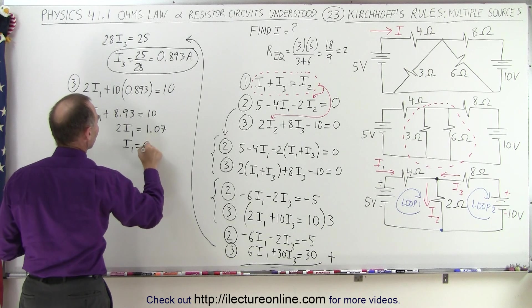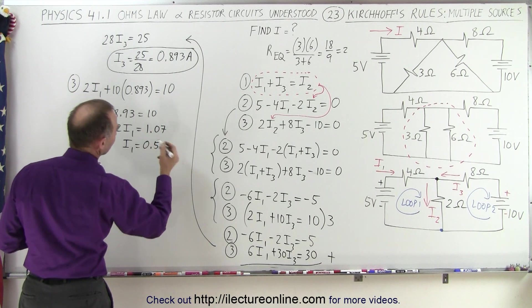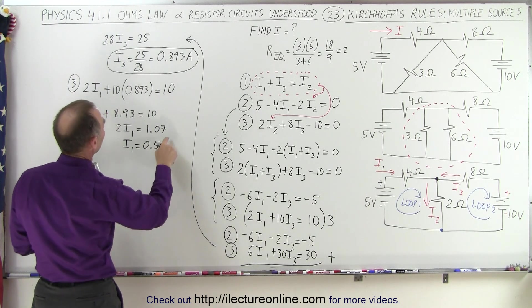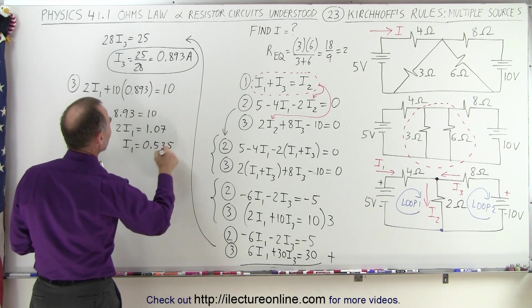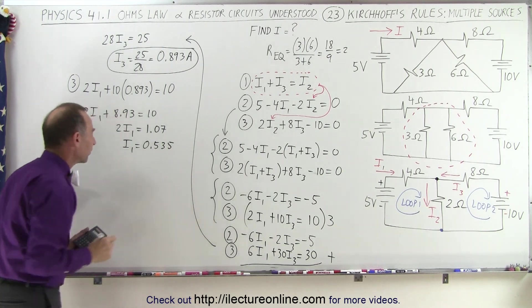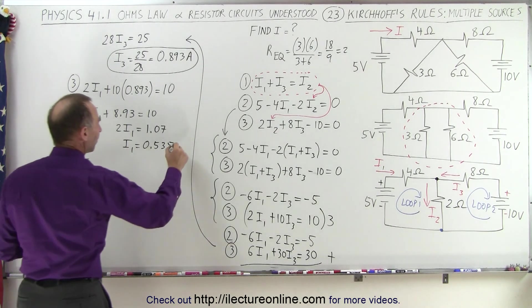So I1 is equal to 1.07 divided by 2, so I1 is equal to 0.535, right? So when we double that, we get 1.07, right? Okay, so that would be in amps.